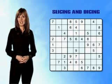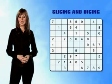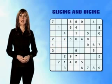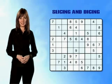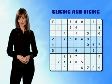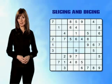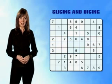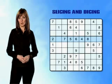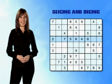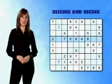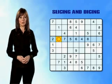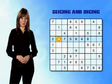We're going to use Slicing and Dicing to try and place a 9 in the middle-left mini-grid. To find out where the 9 could go, we need to look at the middle band of mini-grids and use the information we've already been given in each of the rows. Slicing through row 4, we can see that a 9 hasn't yet been placed anywhere else in the row, so the empty box in the centre of the mini-grid we're studying is a possibility.